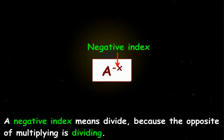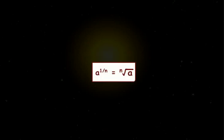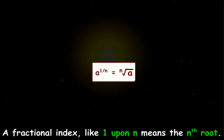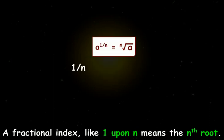A negative index means divide because the opposite of multiplying is dividing. A fractional index like 1 upon n means the nth root.